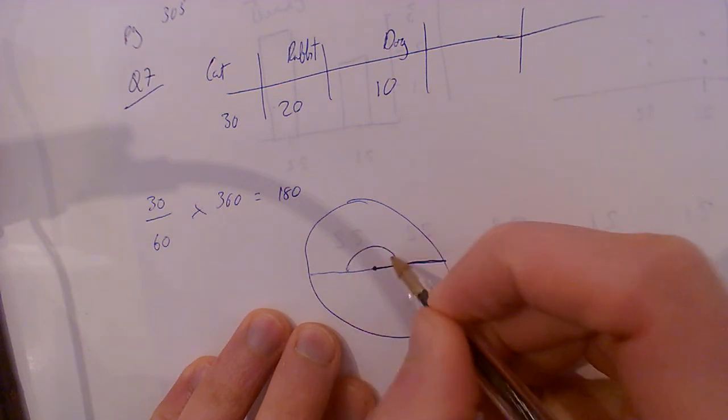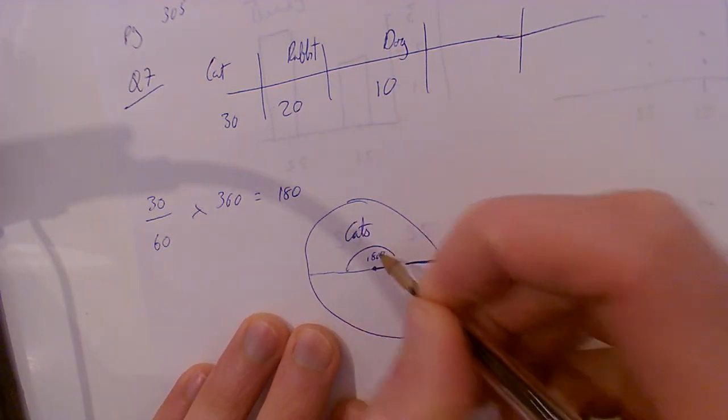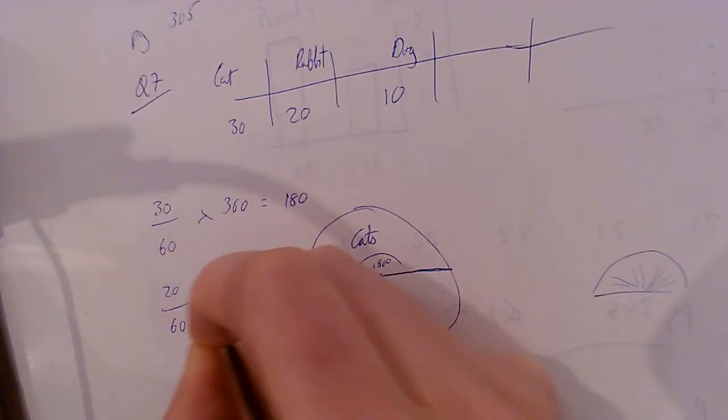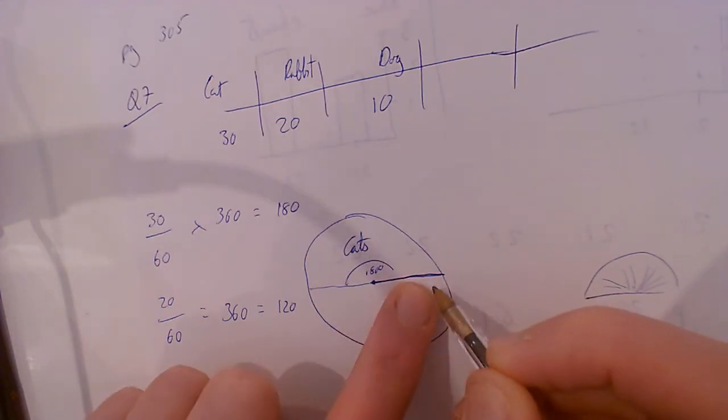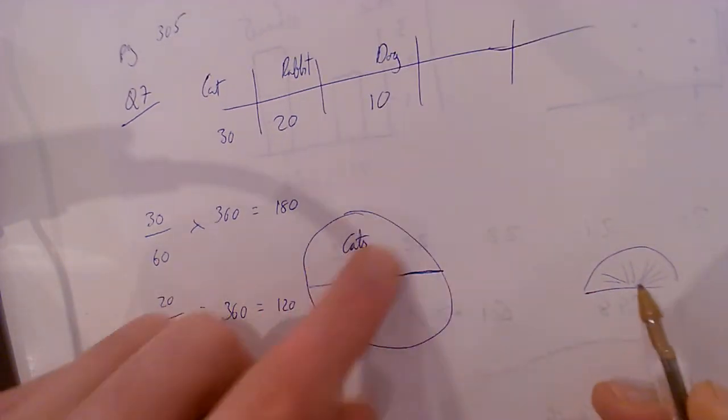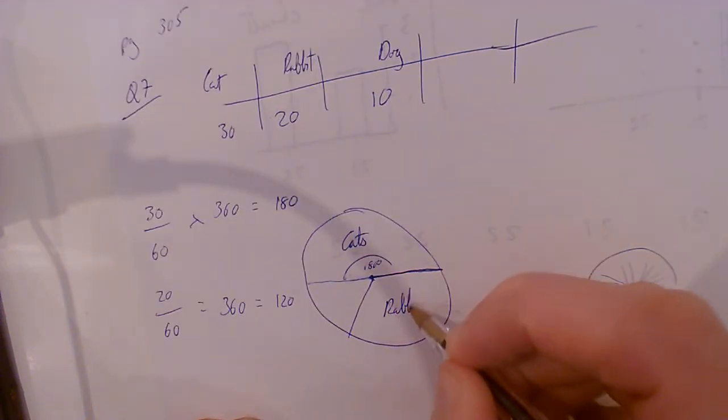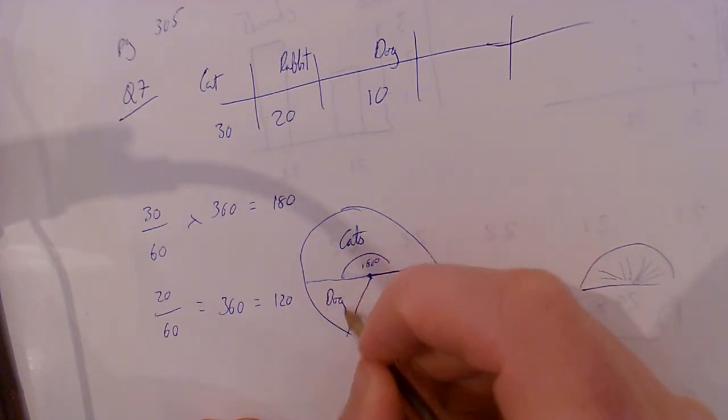So that's cats - that section, 180 degrees. Then I'd go along to rabbit. 20/60 times 360, working it out in my head, that's 120. I'd go to here, put it upside down and go to 120, which will be around here. And that's rabbit. I could measure dog, but it's the remaining section and that's that done. Pretty simple.